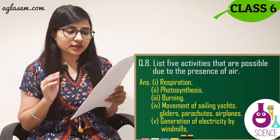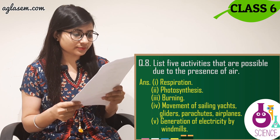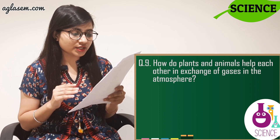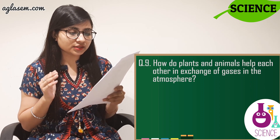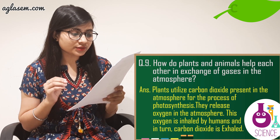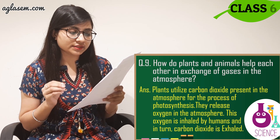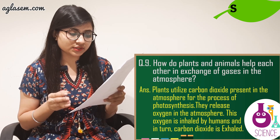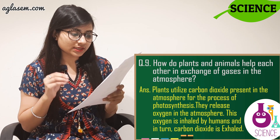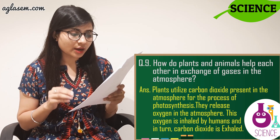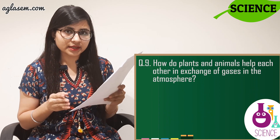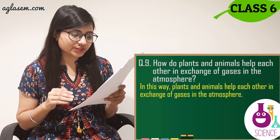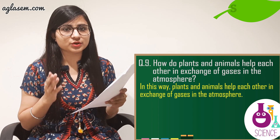Question number 9: How do plants and animals help each other in the exchange of gases in the atmosphere? The answer is: plants utilize carbon dioxide present in the atmosphere for photosynthesis and release oxygen into the atmosphere. This oxygen is inhaled by humans, and in turn carbon dioxide is exhaled. A diagram is shown on screen. In this way, plants and animals help each other in the exchange of gases in the atmosphere.